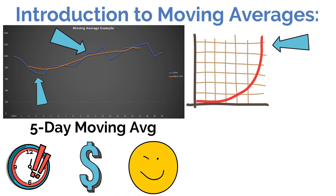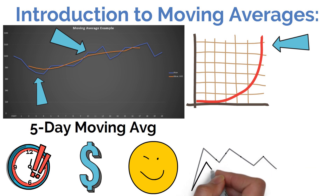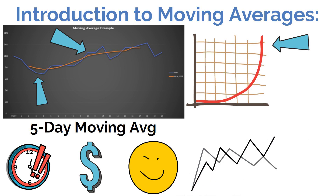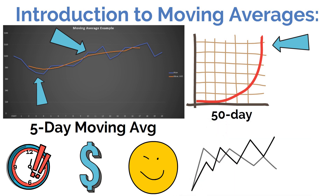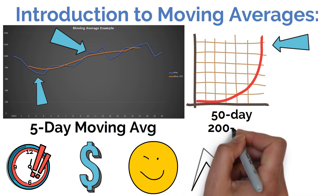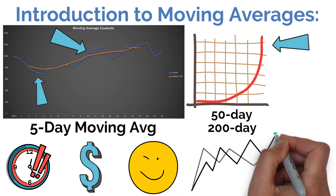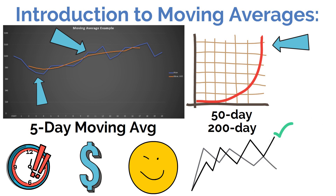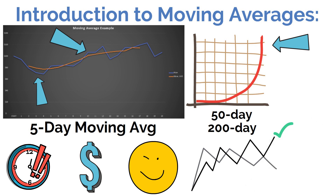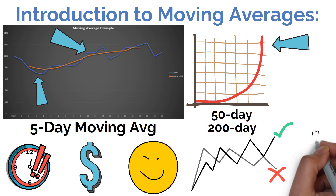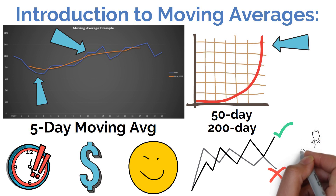Other investors use multiple moving averages to help them make investing decisions. For instance, you could use a 50- and 200-day moving average to determine the investment's trend. If the shorter-term moving average — in this case the 50-day average — rises above the longer-term average, then you buy. If it falls below the longer-term average, then you sell. Those are the basics behind this strategy.